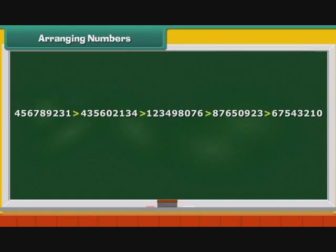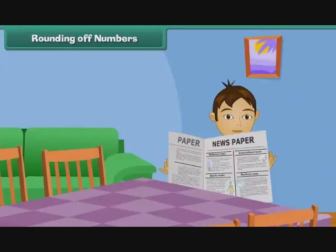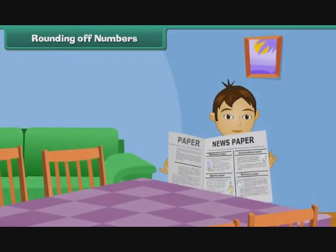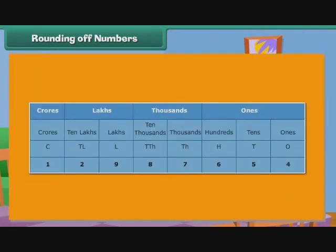Ratan comes across a headline in a newspaper and wonders if the figure can be simplified and made easy to read. Yes, we can make the figure easy to read by rounding it off. Let us begin by rounding off 12987654 to the nearest 10. We first consider the digit at the ones place. It is 4. Since 4 is smaller than 5, we replace it with 0.